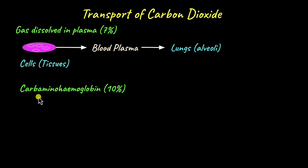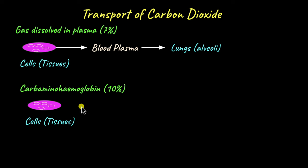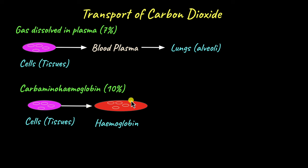Next we look at carbaminohemoglobin. Carbon dioxide produced in the cells accumulates until a certain partial pressure is reached, then diffuses out of the cells and into the red blood cells. Specifically, it goes and binds with hemoglobin. We saw in the video on transport of oxygen that hemoglobin contains allosteric sites for binding of hydrogen ions and carbon dioxide — so carbon dioxide within the red blood cells binds to those allosteric sites on hemoglobin.